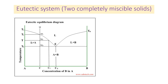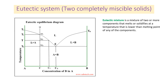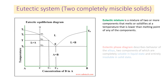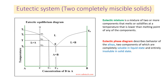A eutectic system, also known as two completely miscible solids, is a mixture of two or more components that melts or solidifies at a temperature lower than the melting point of any of the components. Here we have the eutectic phase diagram that describes the behavior of alloys, of which the two components are completely soluble in the liquid state and entirely insoluble in the solid state.